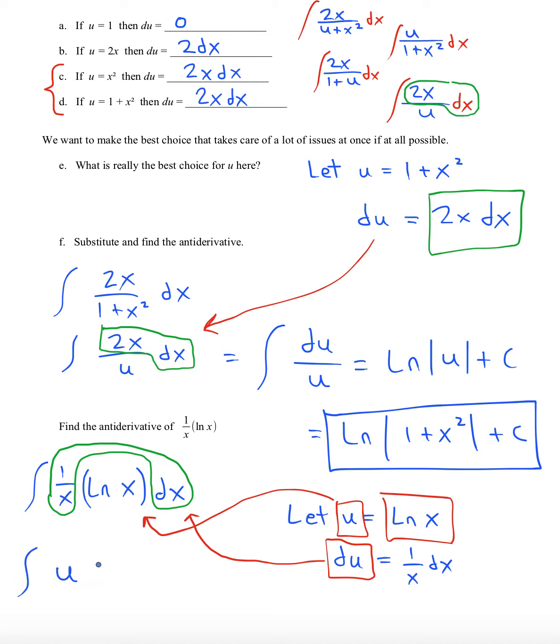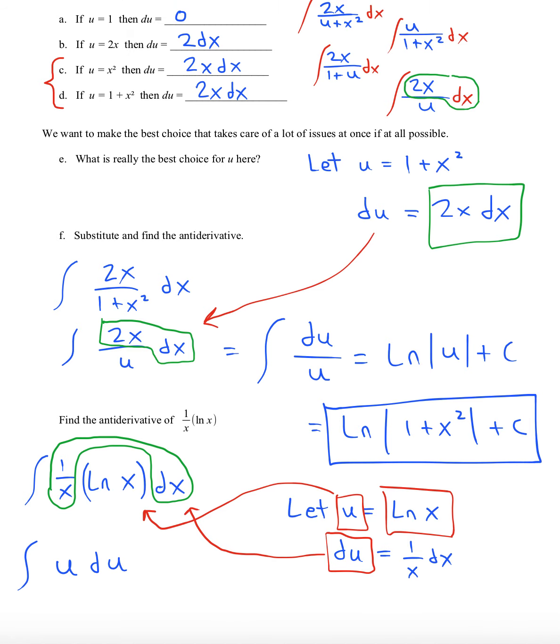So we'll take ln x and we'll substitute in u in its place and put a du in its place. We'll get u du. The antiderivative is 1 half u squared plus c. And we'll just put the ln x back in. And we're done.